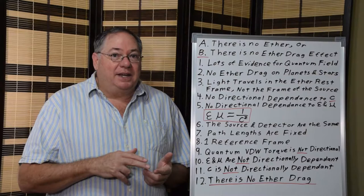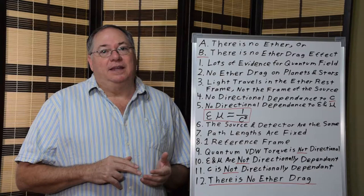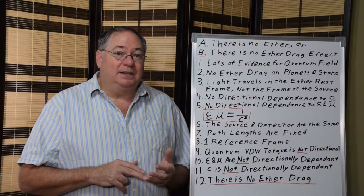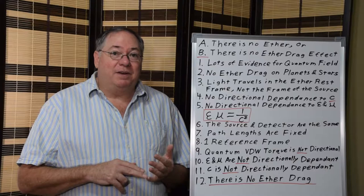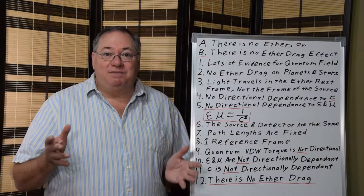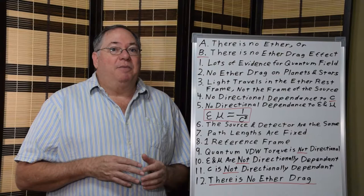We have things like the Lamb shift, the self-energy of an electron, the correction terms to the g-factor which are based on the self-energy of an electron. We have the Casimir effect, one of my favorites, because the Casimir effect is based on Van der Waals forces. So the quantum field has Van der Waals forces, which requires that it's filled with dipoles.